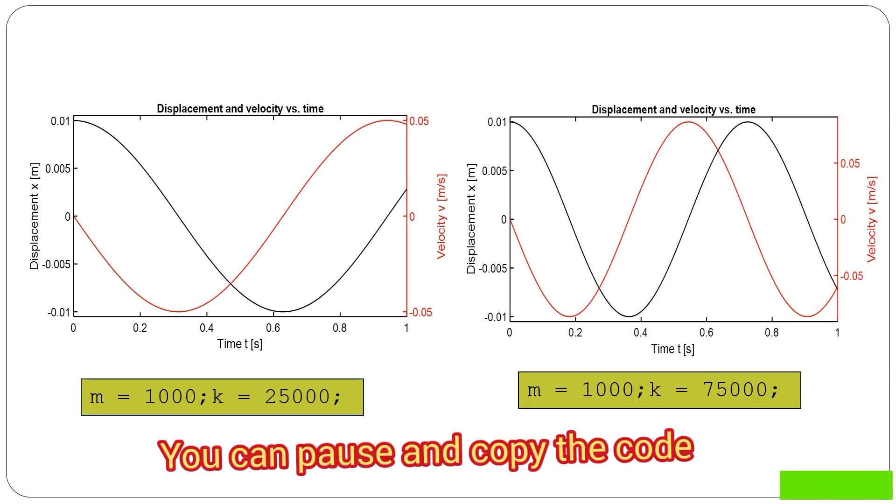So now in order to be able to play around a little bit with the solution that you see here, we can change the mass, spring stiffness, or initial conditions in MATLAB code, and then show how the solution changes with changing parameters. Two examples are shown here.